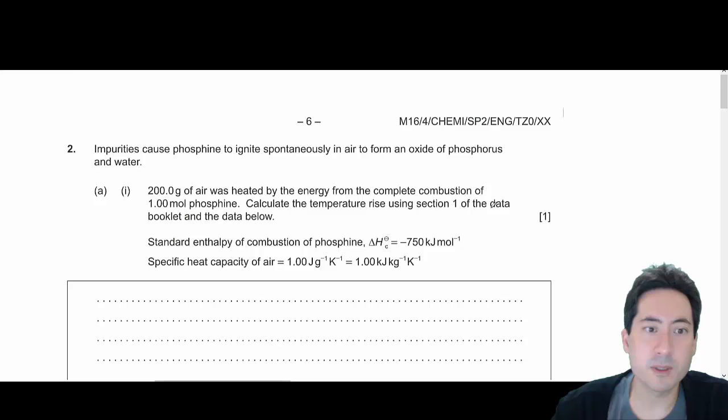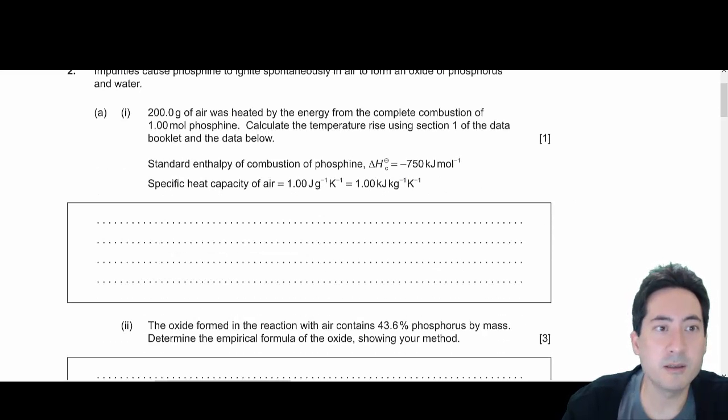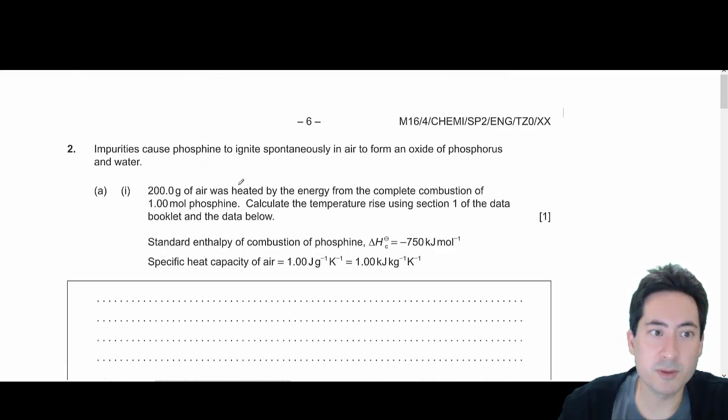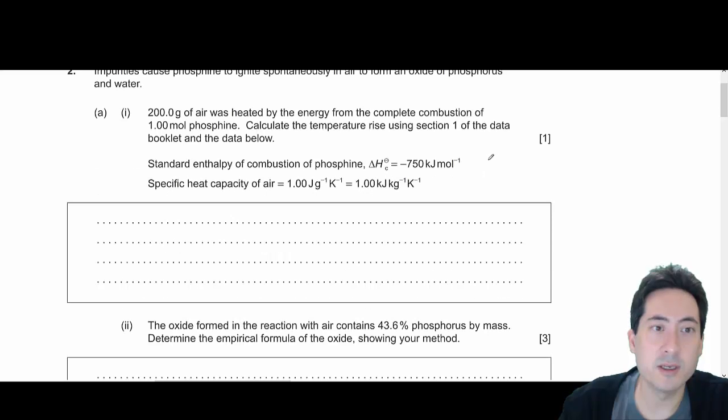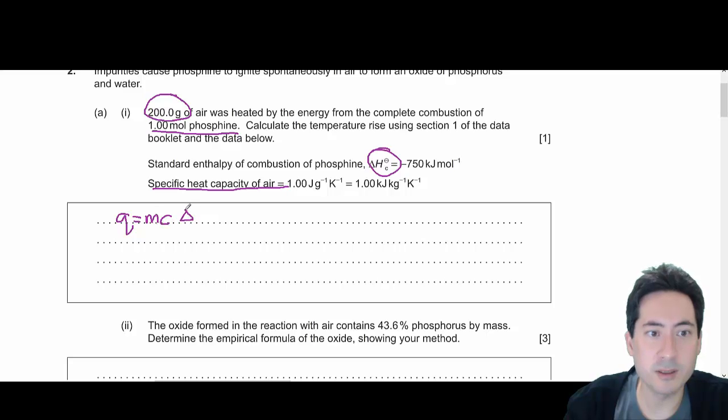So, moving on to here. The first one is how to work out the temperature change. Which impurities cause phosphine to ignite spontaneously, forming a phosphide of phosphorus. So we've got 200 grams of air is heated with one mole of phosphine. Calculate temperature rise using your data booklet, and you're given the delta H and you're given the C. So if you go to your data booklet, it's Q equals MC delta T.